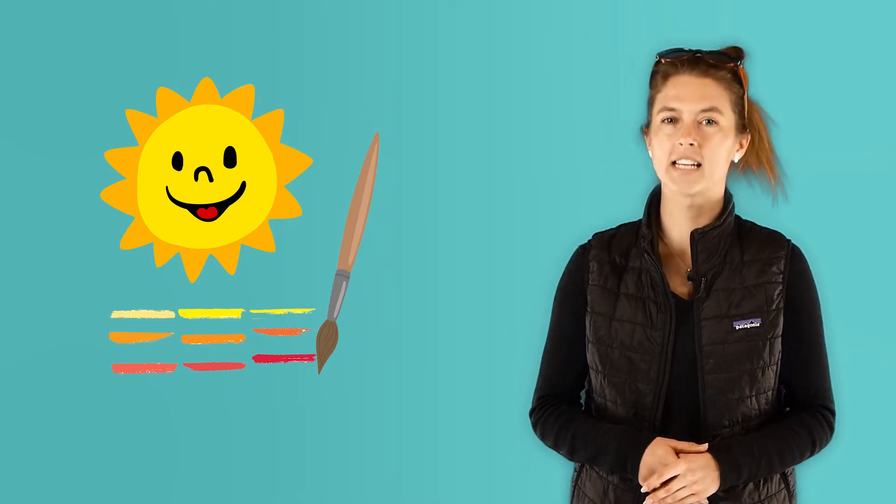What color is our sun? Did you say yellow, orange, red? Well, our sun can be all of these colors depending on the time of day.